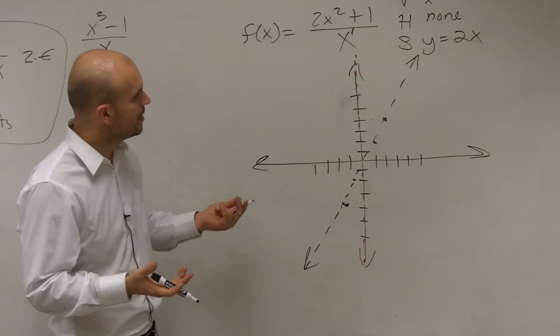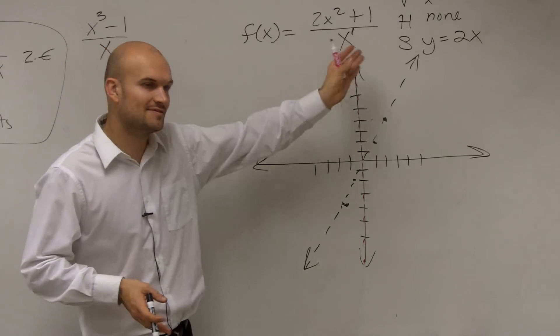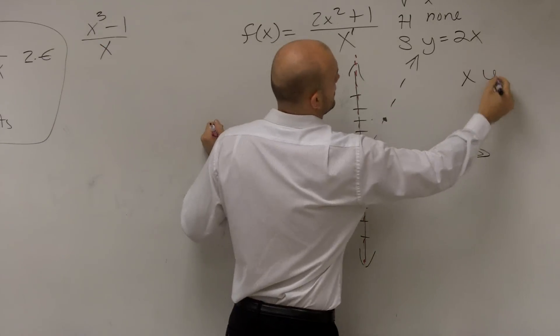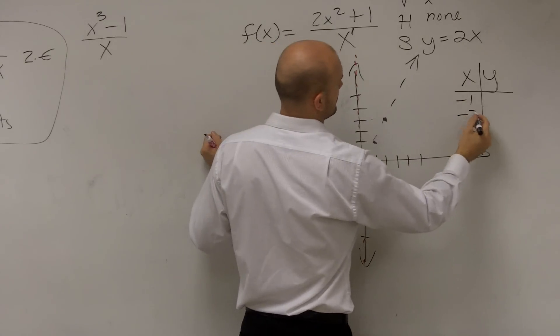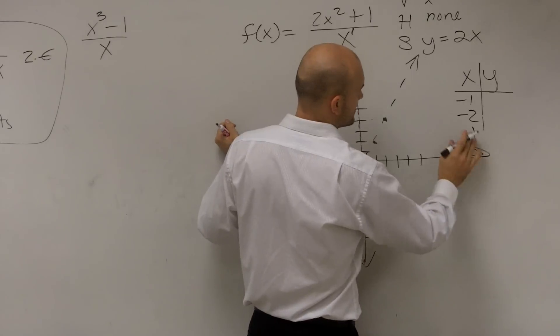So what we're going to do is I'm just going to check. I'm just going to pick two points. Two points to the left and two points to the right. So I will just do, how about we do negative 1, negative 2. And let's do 1 and 2. Right? Let's not make this too crazy on ourselves.